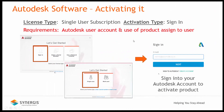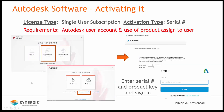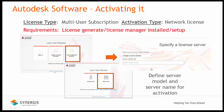Let's summarize our activation processes. If your license type is single user subscription and the activation type is sign-in, on the 'Let's Get Started' dialog you would pick the sign-in or single user option and sign into your Autodesk account. If you have a single user subscription but also have a serial number, you would pick the 'Enter Serial Number' link, enter your serial number and product key, and then sign in. If you have a multi-user subscription — network-based activation — you would pick the 'Use Network License' or multi-user option and then specify your license server information.